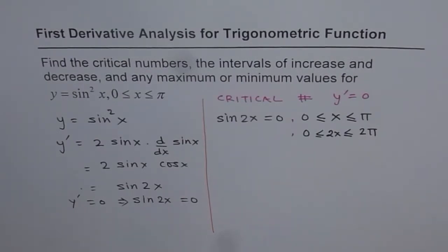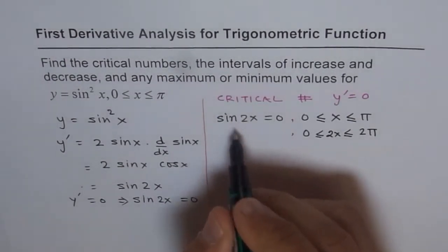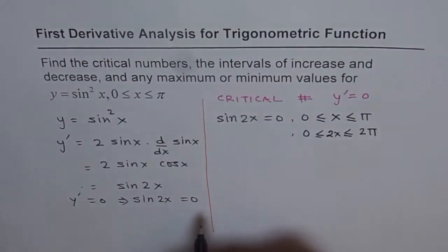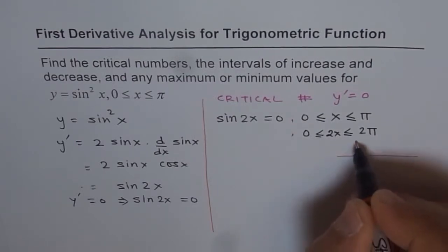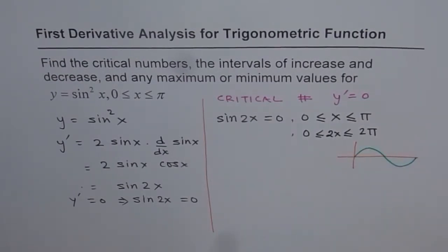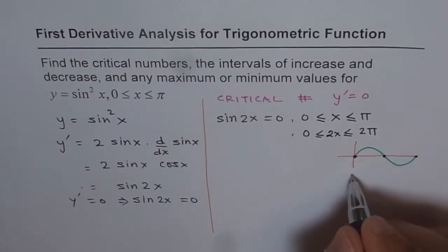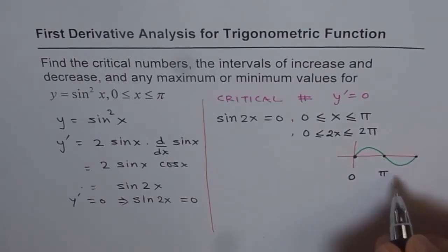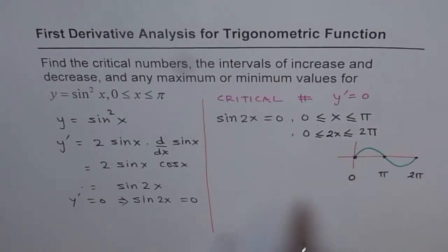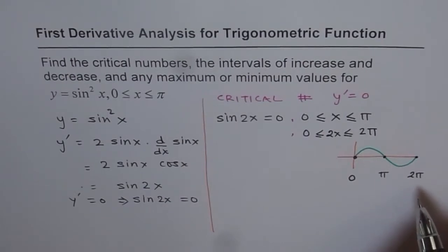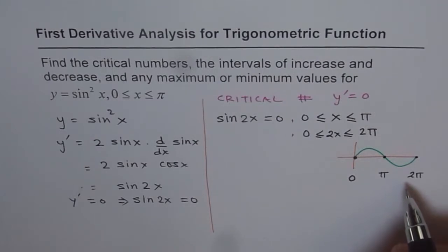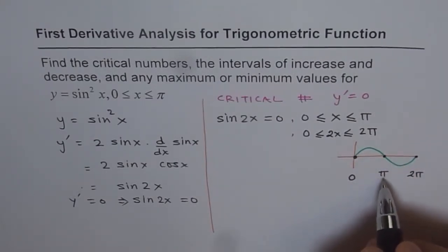Think of this as sin theta. We want sin theta equals zero between 0 and 2pi. If you sketch the sine curve, there are three values where it is zero: at theta equals 0, pi, and 2pi. So in the interval 0 to 2pi, there are three values for which sin 2x will be zero.